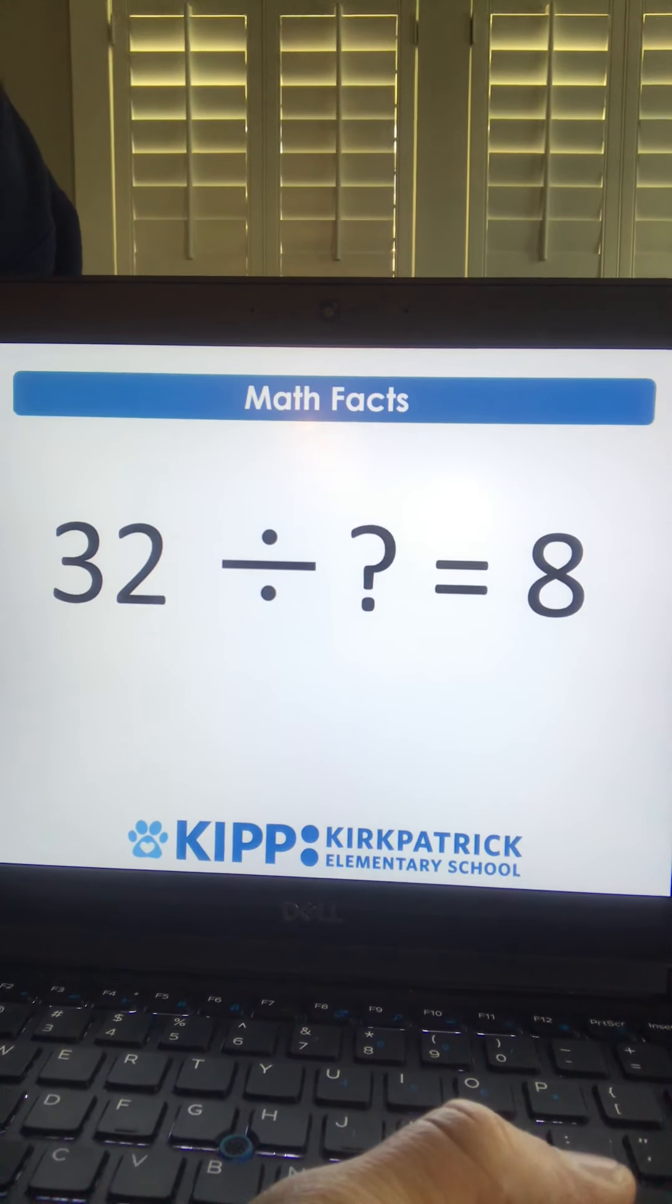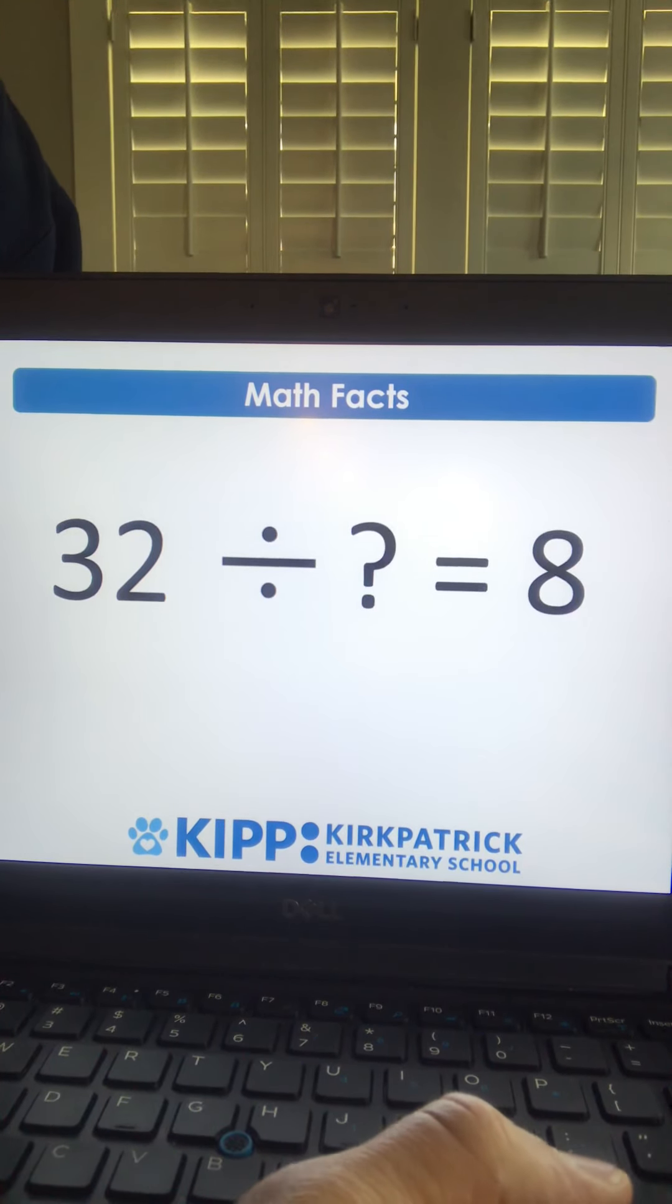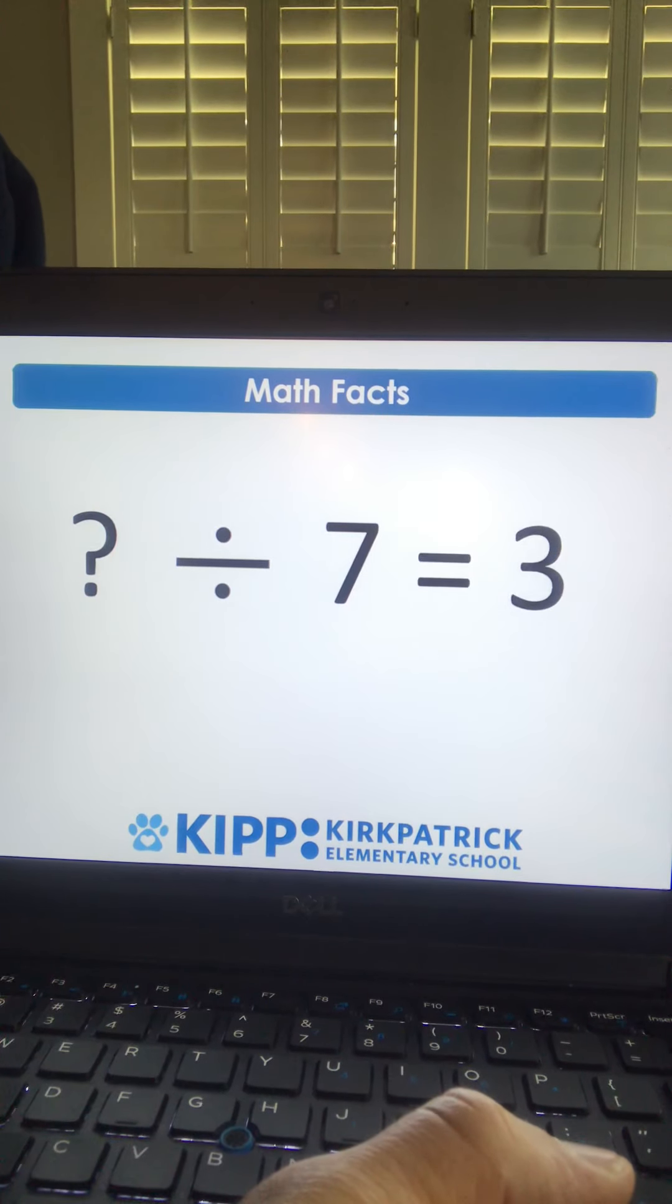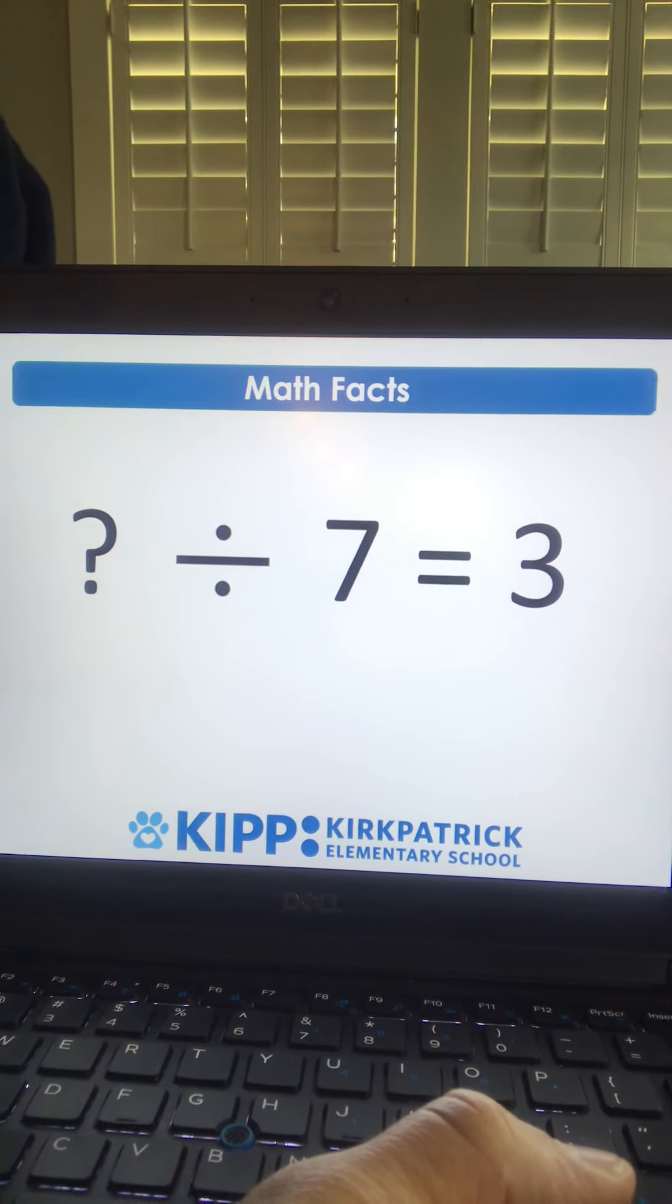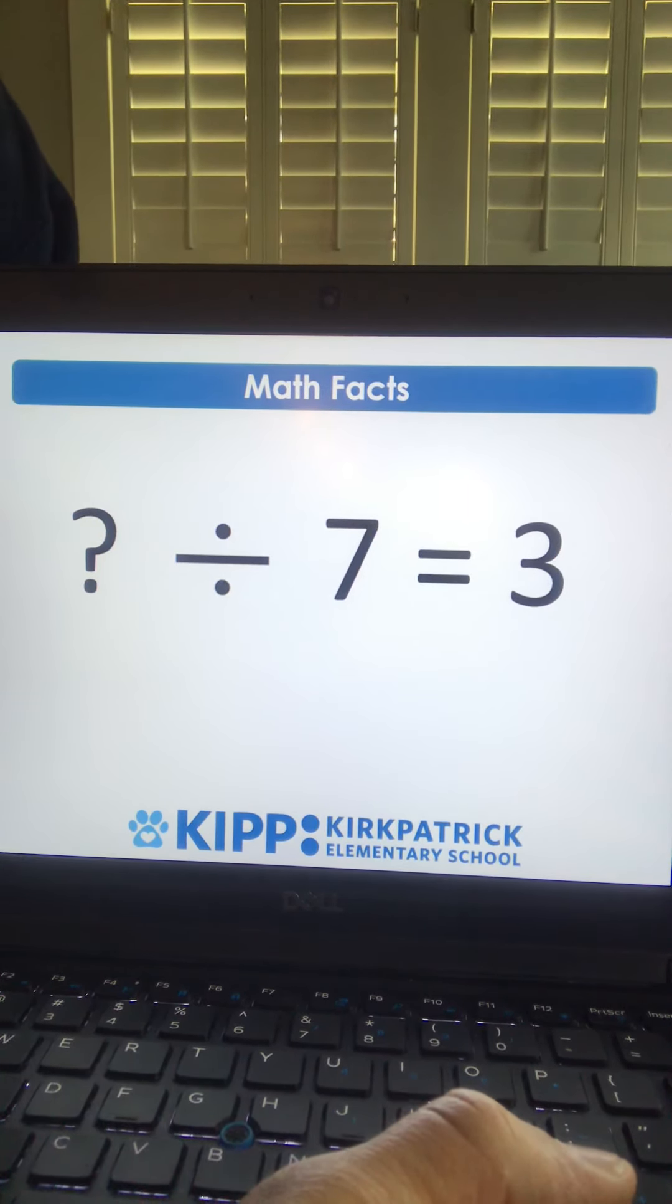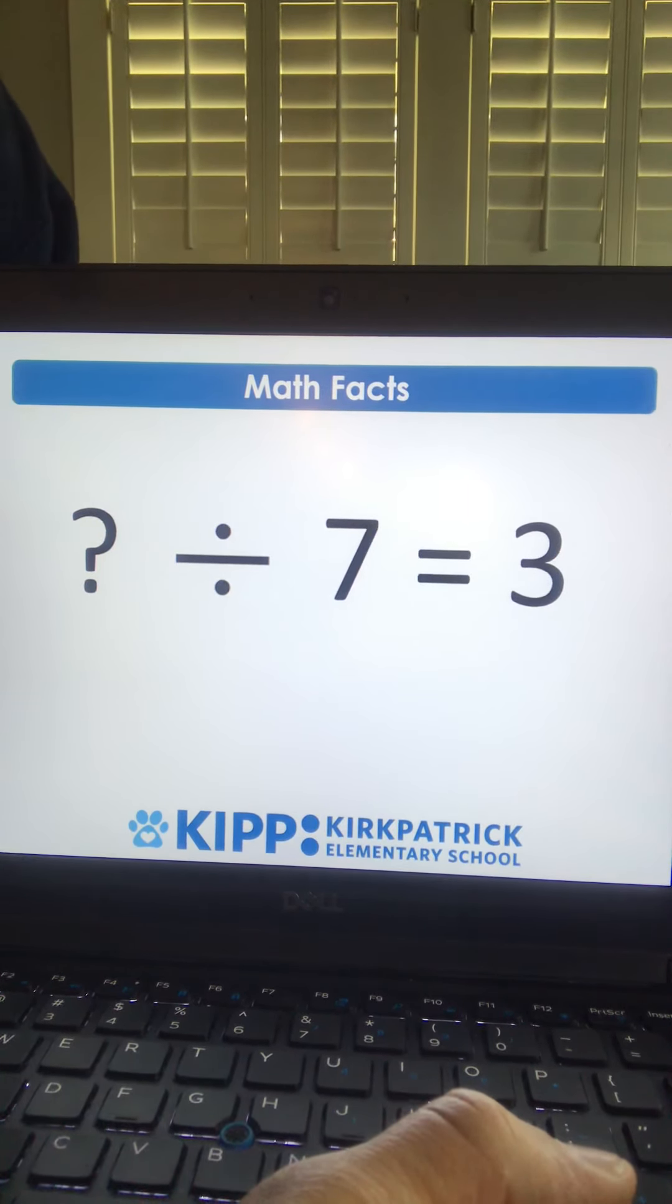24 divided by 8, that answer is 3. 32 divided by what number is equal to 8? Again, you could roll your 8s until you get to 32. That's 4. What number divided by 7 equals 3? That's 21.